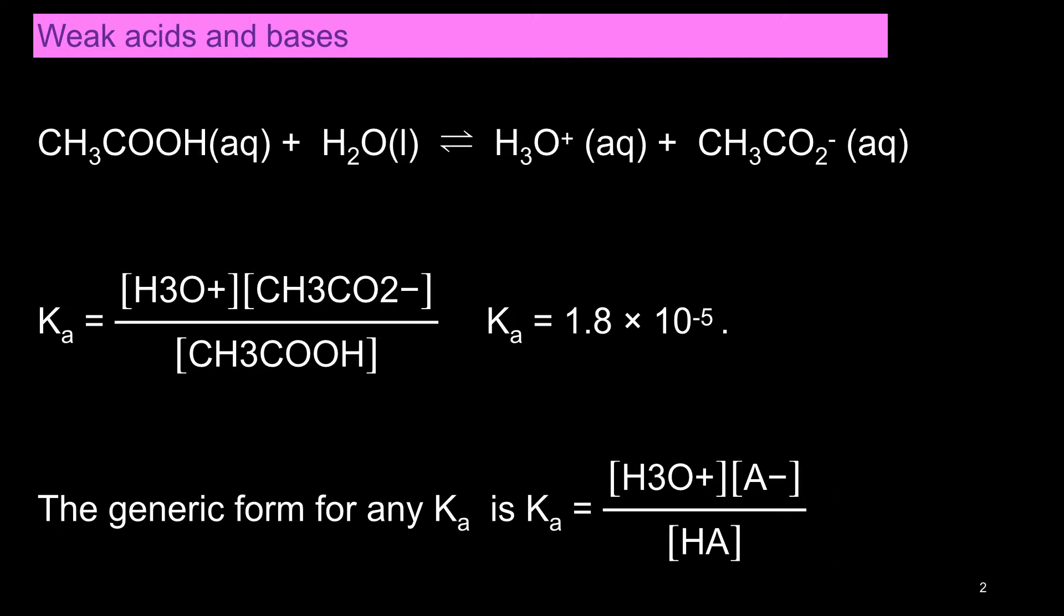Each weak acid or weak base has a known dissociation constant KA or KB. These numbers are available in the reference section of your book. You do not need to memorize dissociation constants. If you need one, it will be given to you.